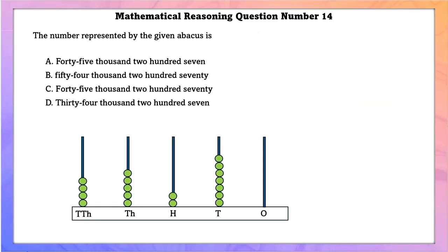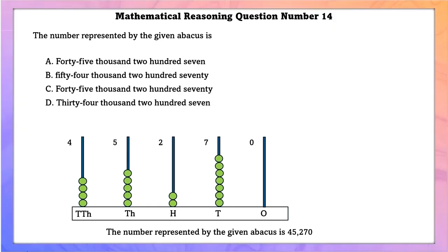Mathematical reasoning question number 14. The number represented by the given abacus is 45,270.